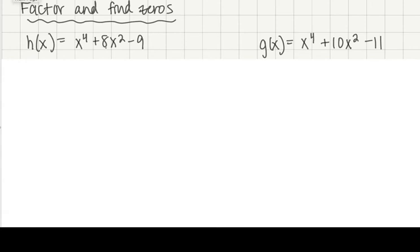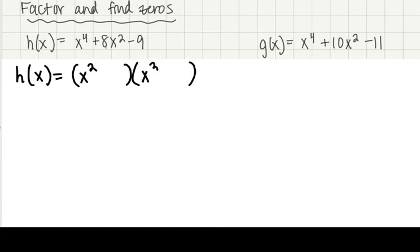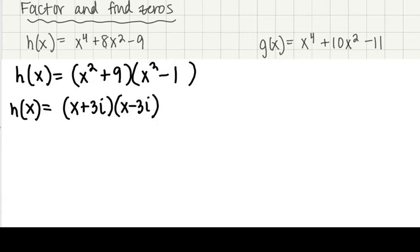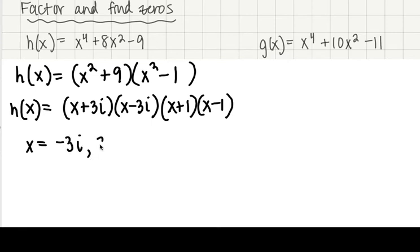Now we'll put it all together — factor and find zeros. h of x equals x to the fourth plus 8x squared minus 9. Factoring: x squared plus 9 times x squared minus 1. Further factoring into linear factors: x squared plus 9 is x plus 3i times x minus 3i, and x squared minus 1 is x plus 1 times x minus 1. Our zeros are x equals negative 3i, positive 3i, negative 1, and positive 1.